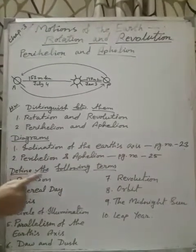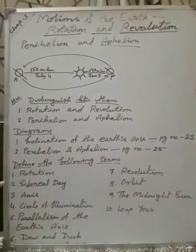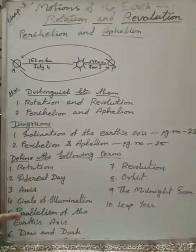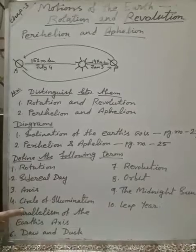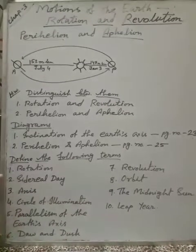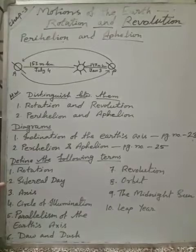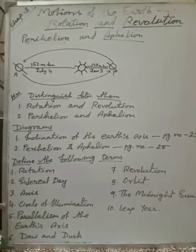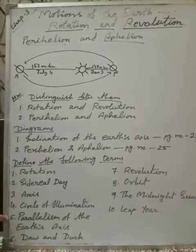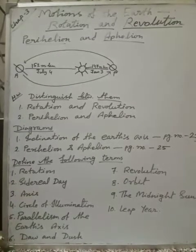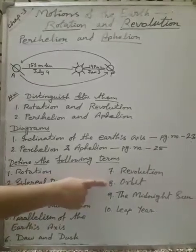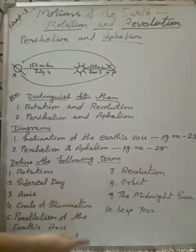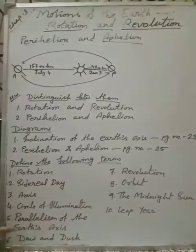And last, define the following terms. 10 terms I have given. Maximum I have discussed. Few I didn't say. You try to write down. Otherwise, if it is not clear, you mark it. That is rotation. Sidereal day. Axis. Circle of illumination. Priorism of the earth's axis. Dawn and dusk. Revolution, orbit, the midnight sun and the leap year. These 10 terms you have to define. At least you try to write these 10.